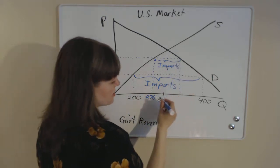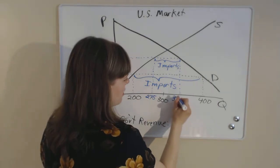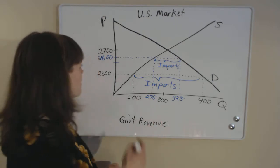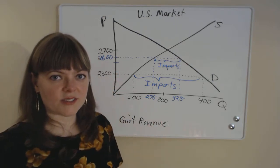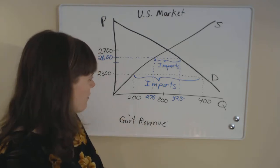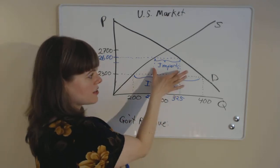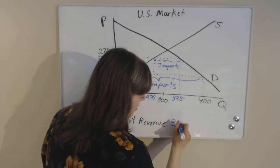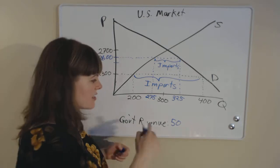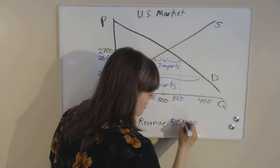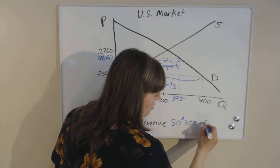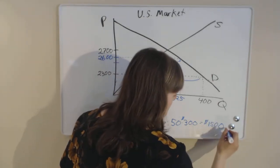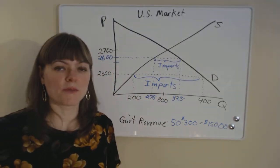And same over here, we can use the same methodology to calculate that 325 consumers are willing to buy at this new essential market price of $2,600. So what is the government revenue? Well, the government revenue is going to be the quantity of imports. So we have 50 imports that are coming in the U.S. And the U.S. government taxes each of those $300. So total government revenue is going to be $15,000 from this new import tax.